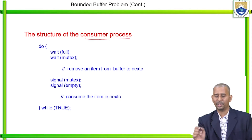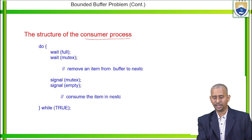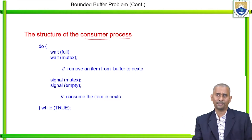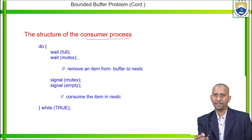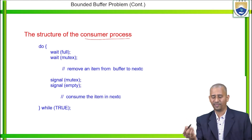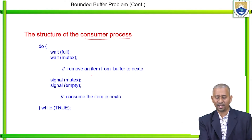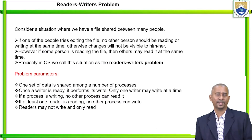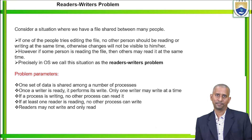What is the structure of the consumer process? In the consumer process, first we do wait(full), which represents whether the consumer has a full buffer to consume from, then wait(mutex). Each time, an item is removed from the buffer to the next pointer. Then the item is consumed, represented with signal(mutex) and signal(empty). This is the structure of the consumer process, representing the bounded buffer or producer-consumer problem.